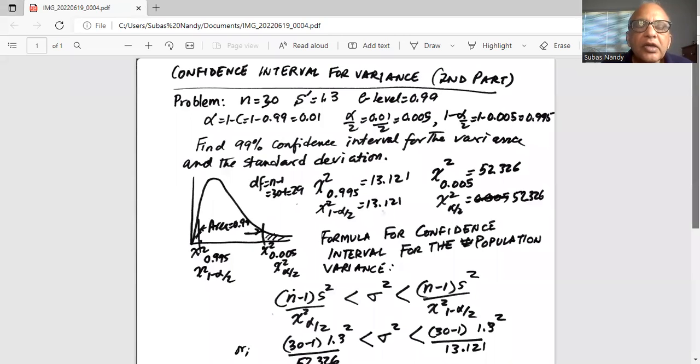So this is the second part of my previous video which was confidence interval for standard deviation. There we found out the two critical values of chi-square. We need to use the chi-square curve to determine the confidence interval for variance and standard deviation.